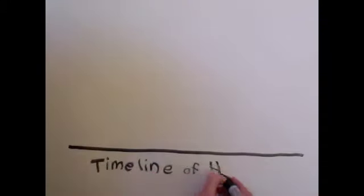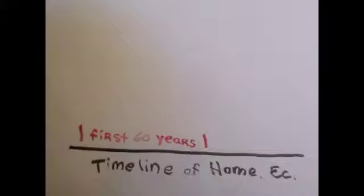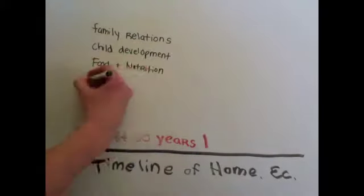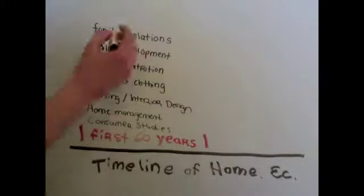The traditional home economics content areas of textiles and clothing, housing and interior design, home management and consumer studies, foods and nutrition, and child development and family relations defined the field for the first 60 years of the 20th century.